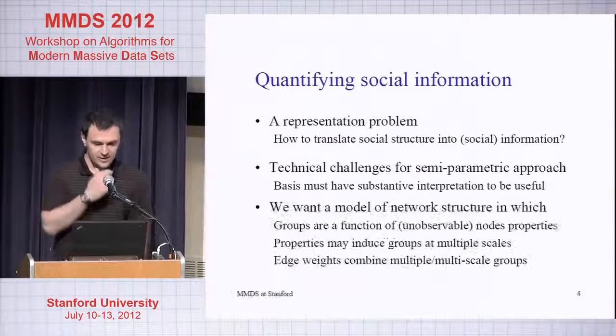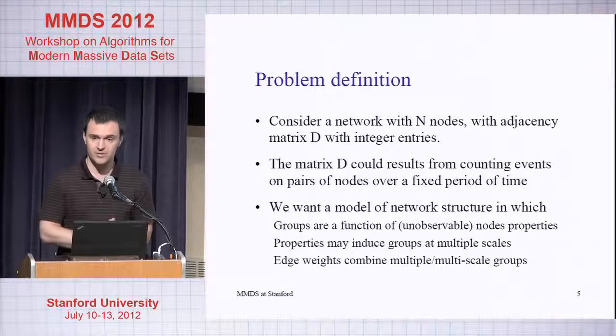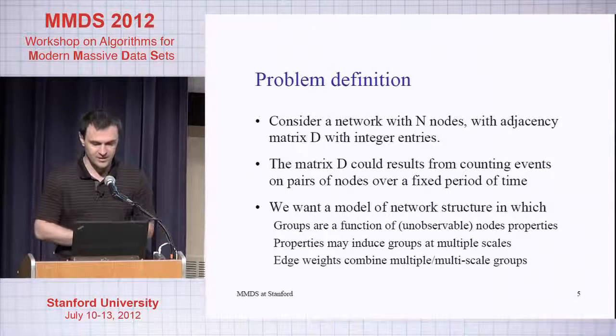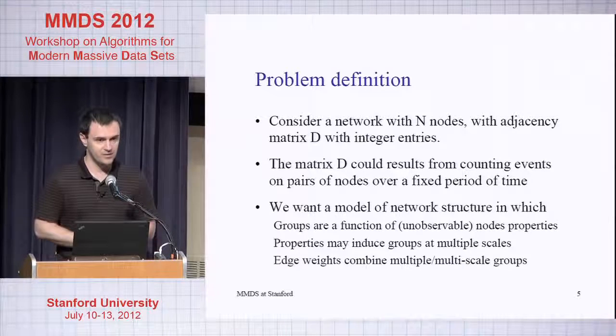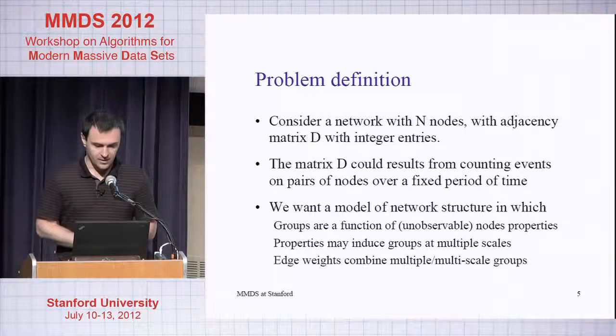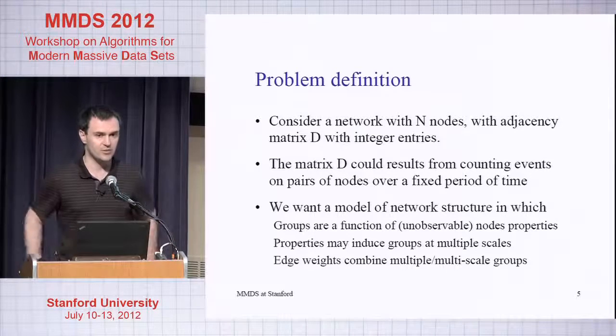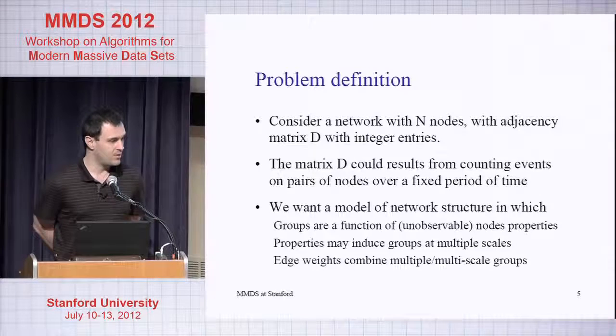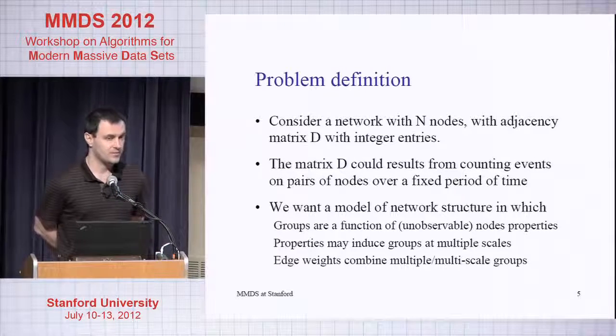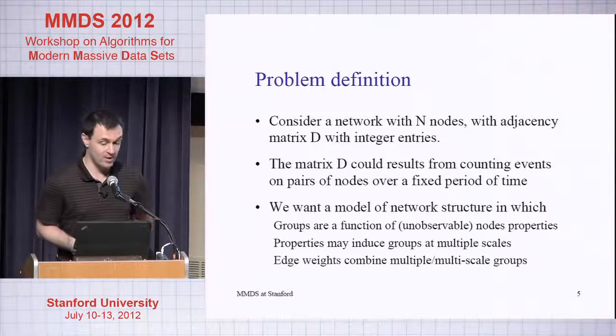The basis encode this notion of multiple membership or multi-scale membership. My observation is a weighted graph with n nodes and we have an adjacency matrix with integer entries we call D. The matrix, you know, you can imagine in the application I present later on is just going to be the number of social interactions on Facebook among users, both public and private.